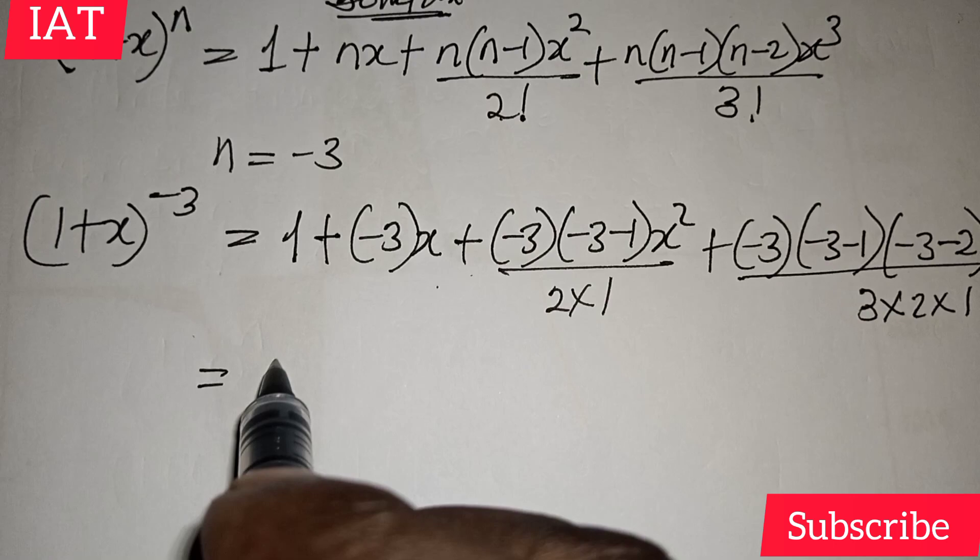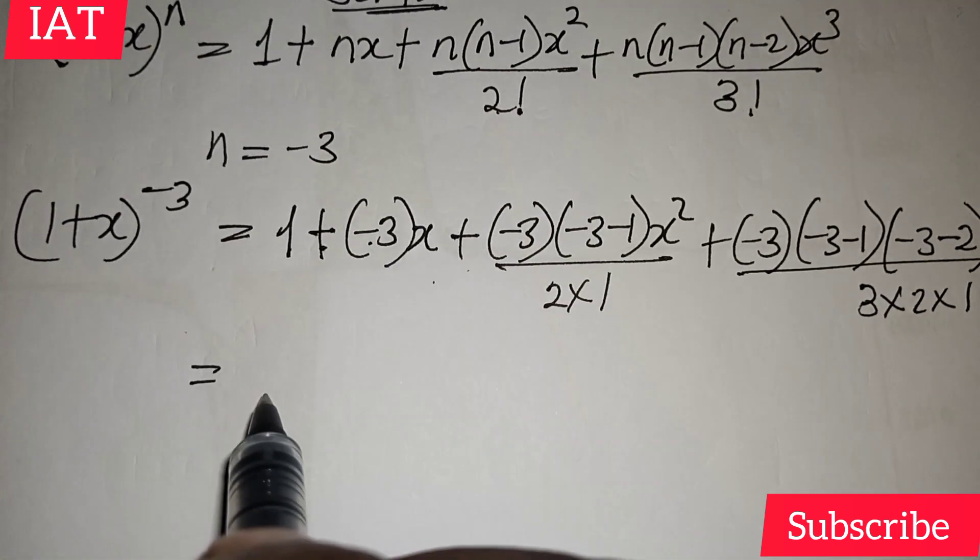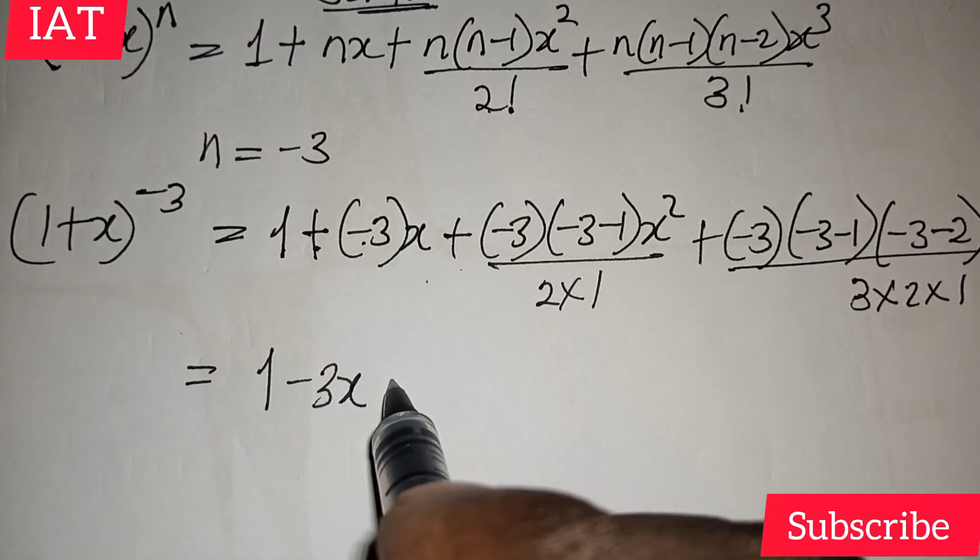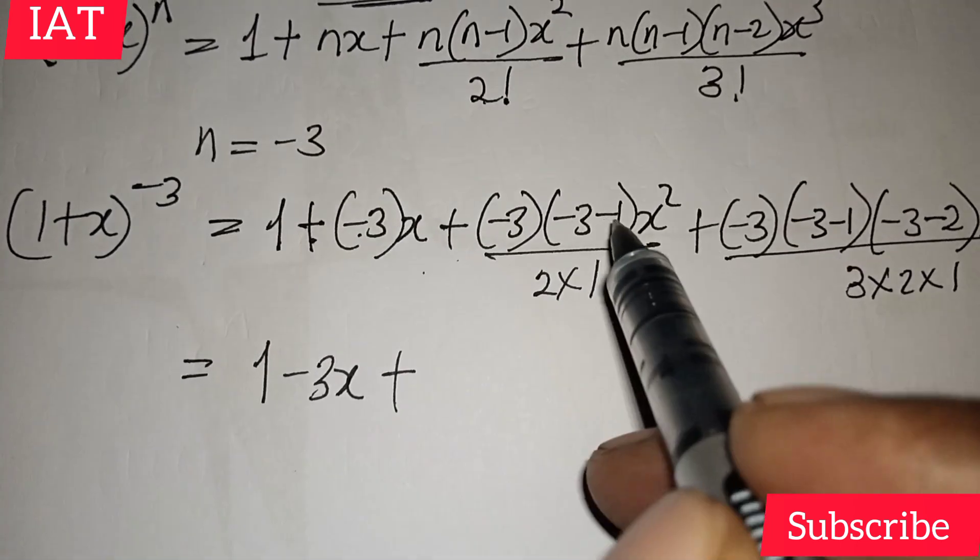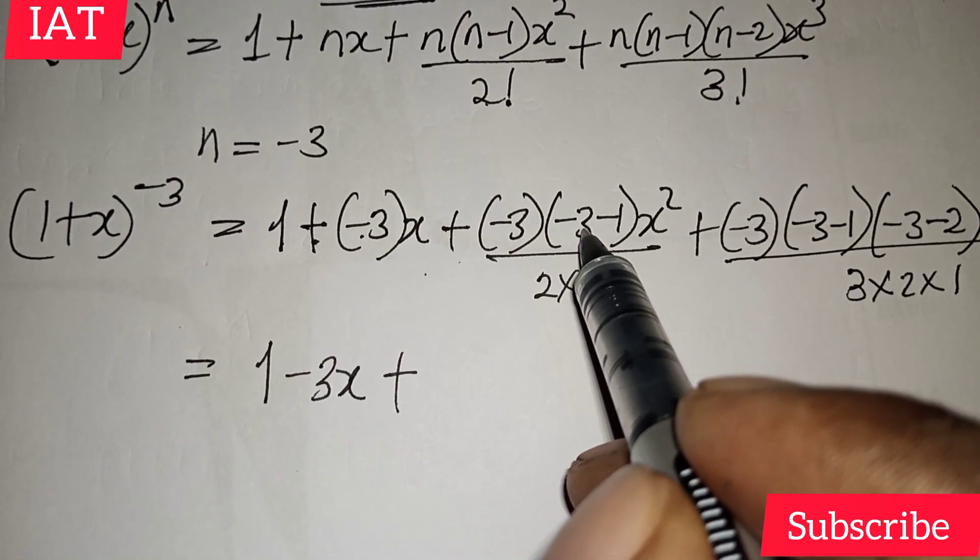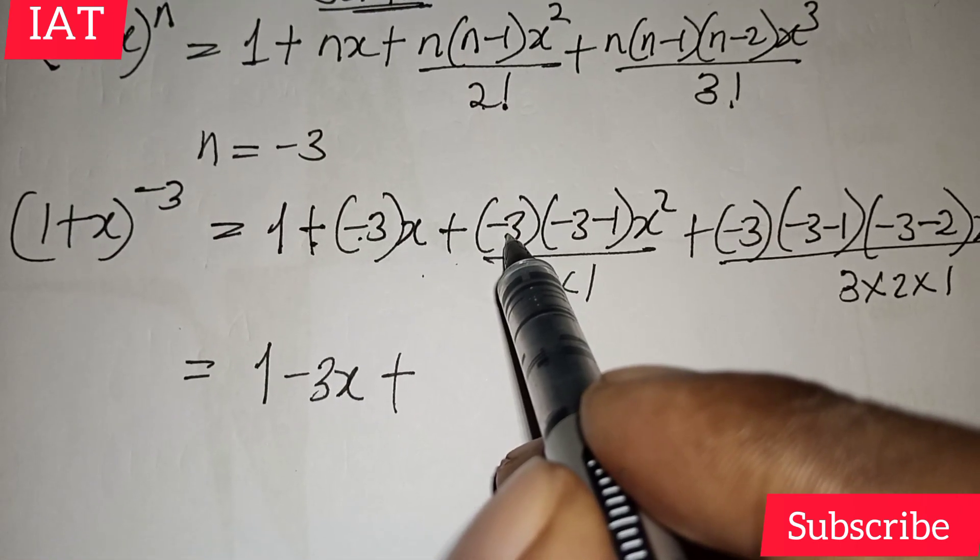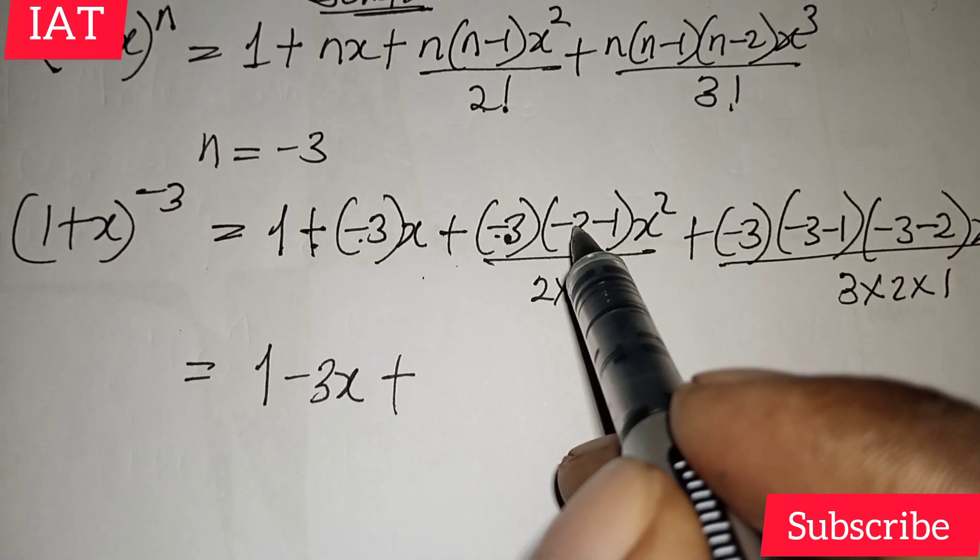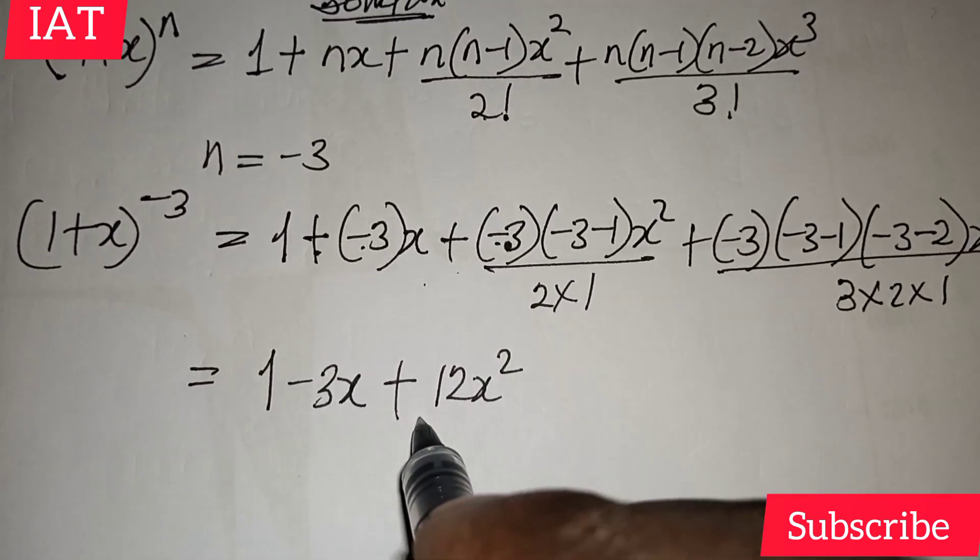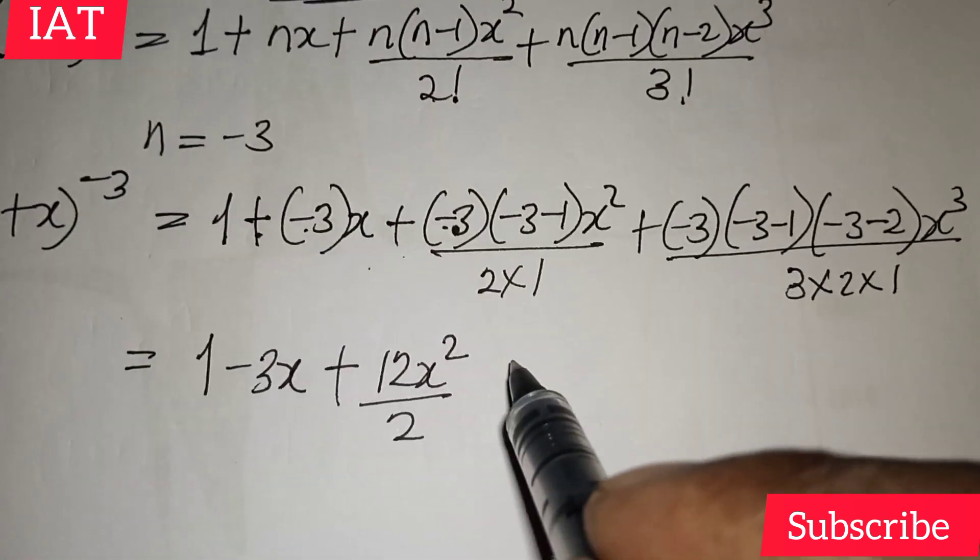So what is the result to this? Plus times minus, minus minus is minus. So we have 1 - 3x. Now, here we have plus (-3-1), we get -4. So -4 times -3 will be -12. It will be plus 12 because minus minus will be plus. So we have plus 12x squared all over 2.